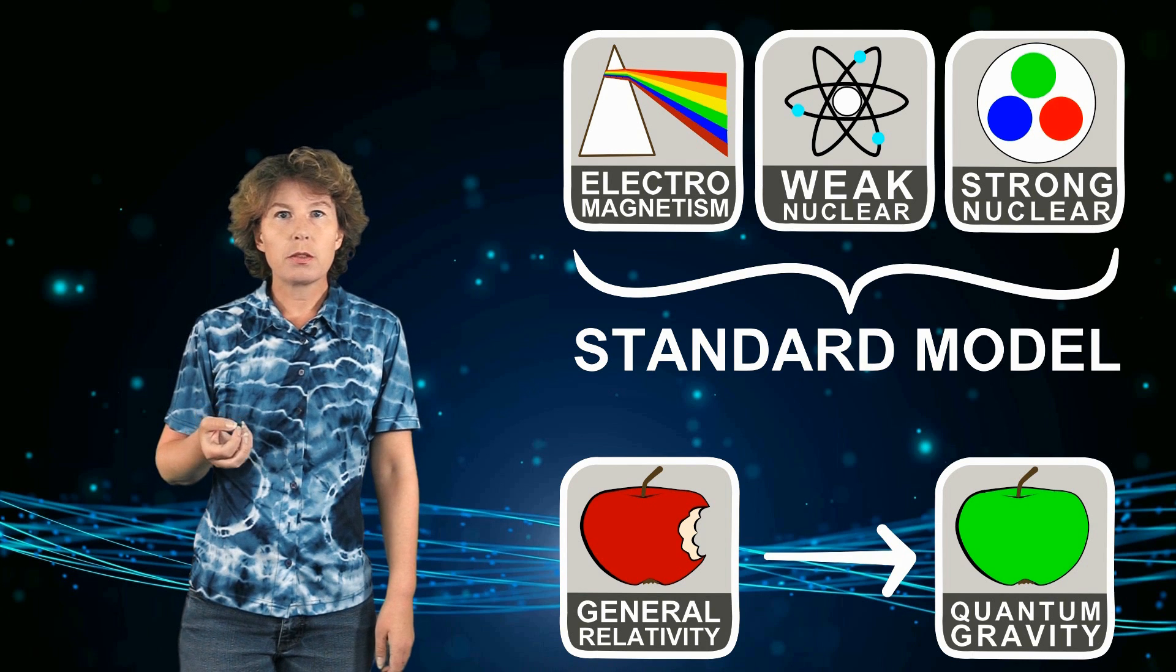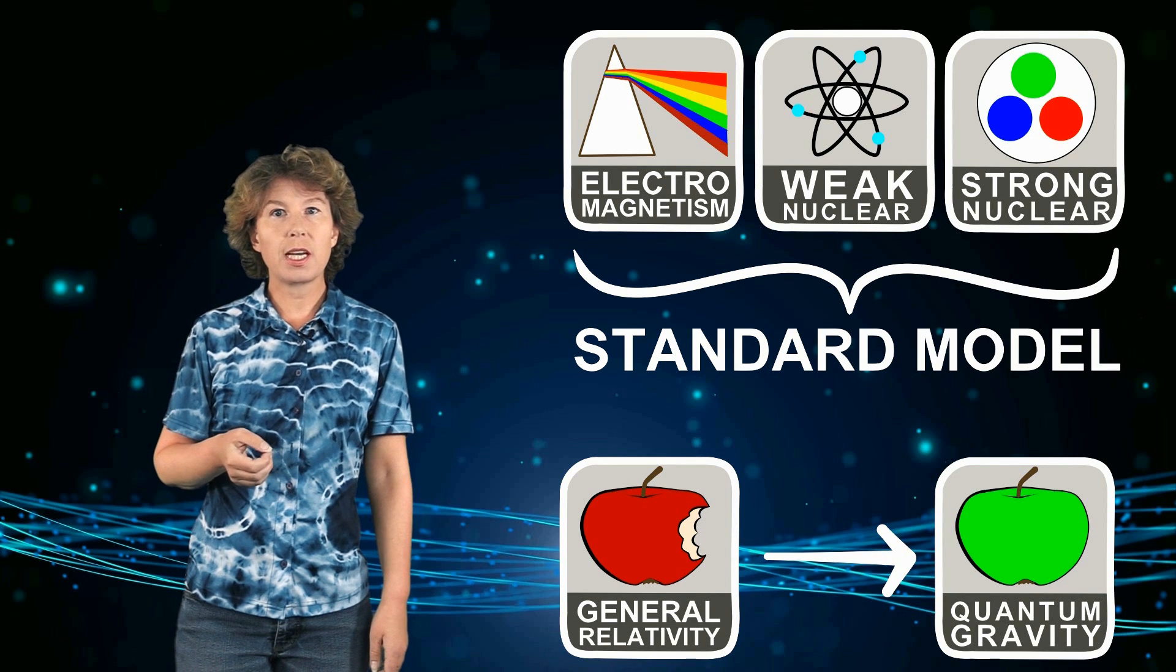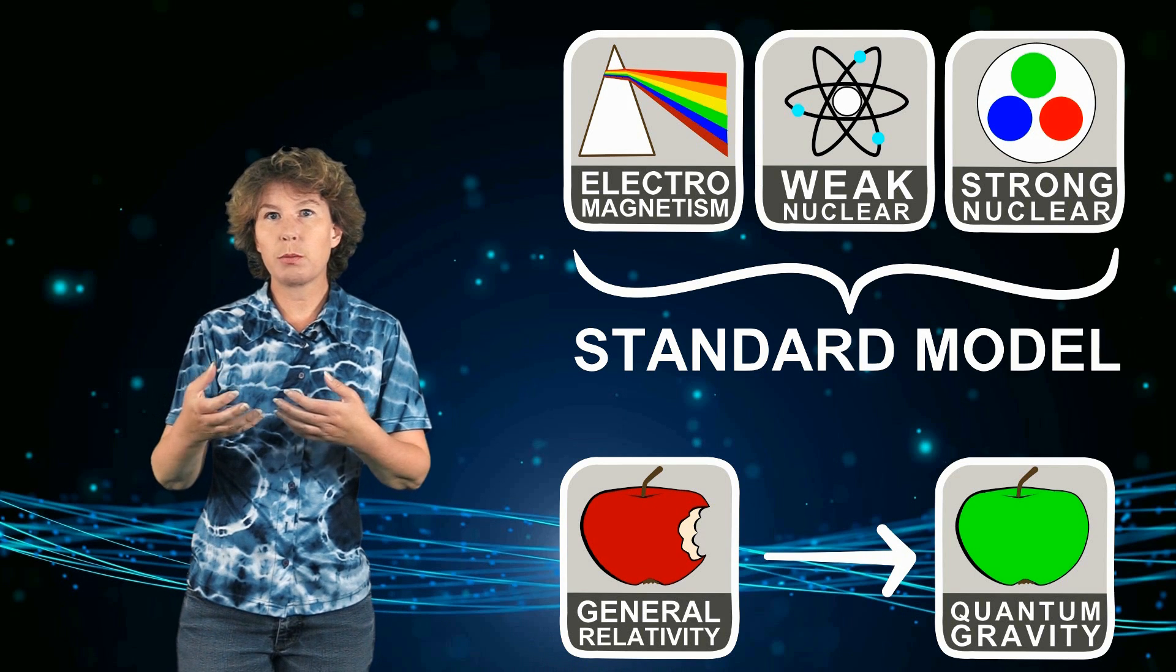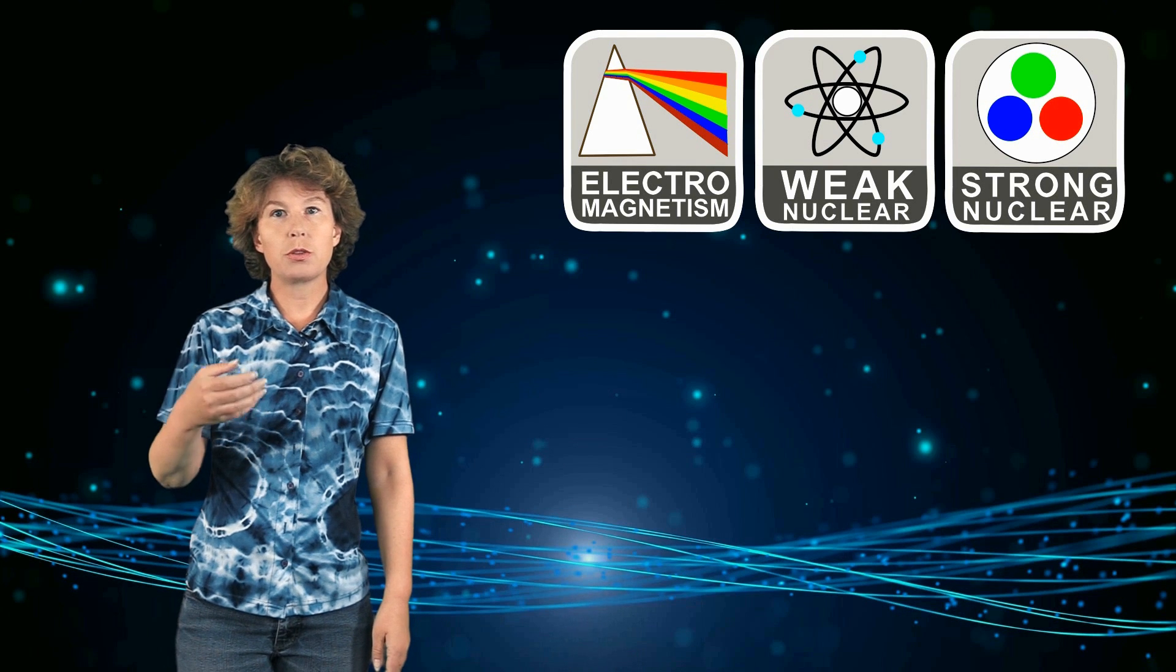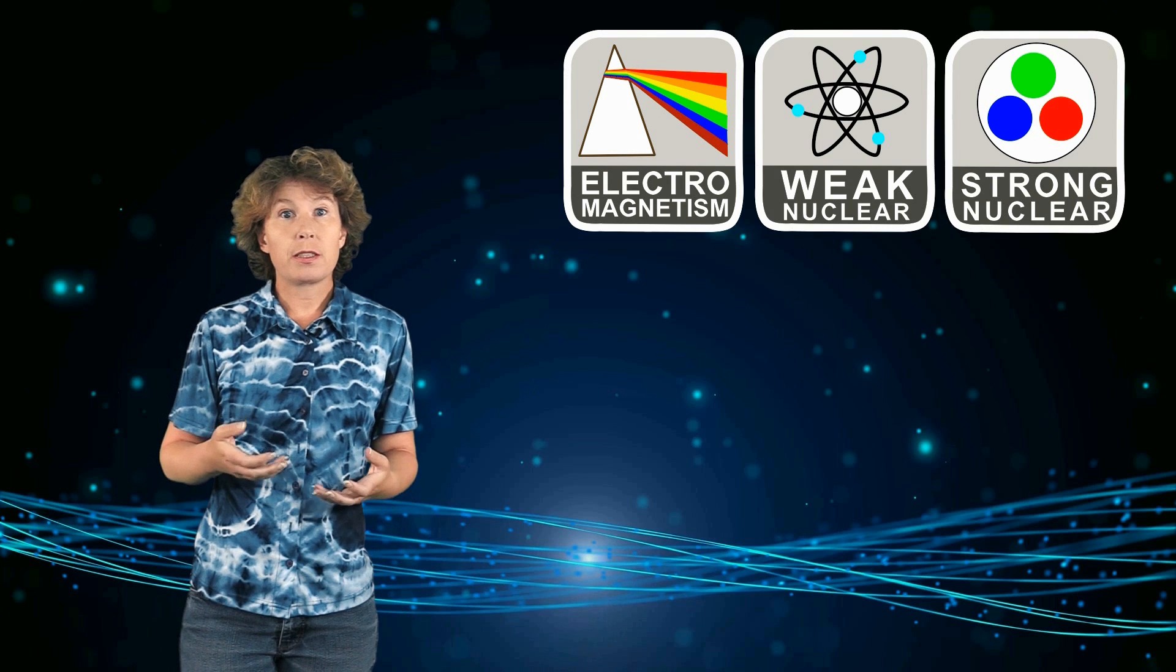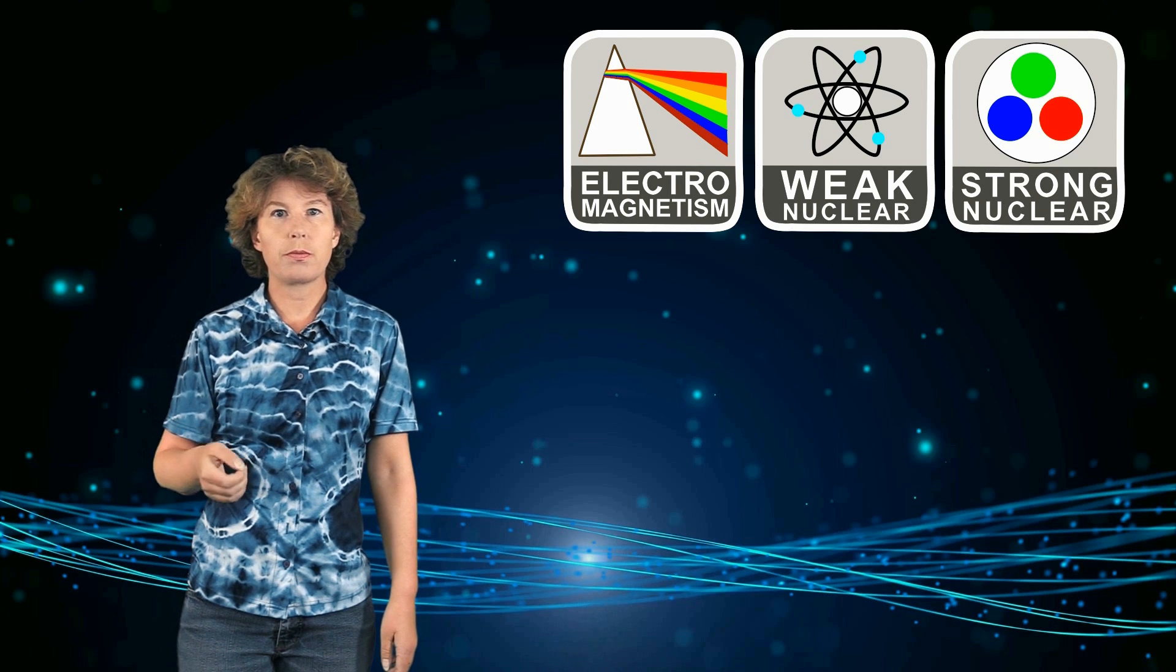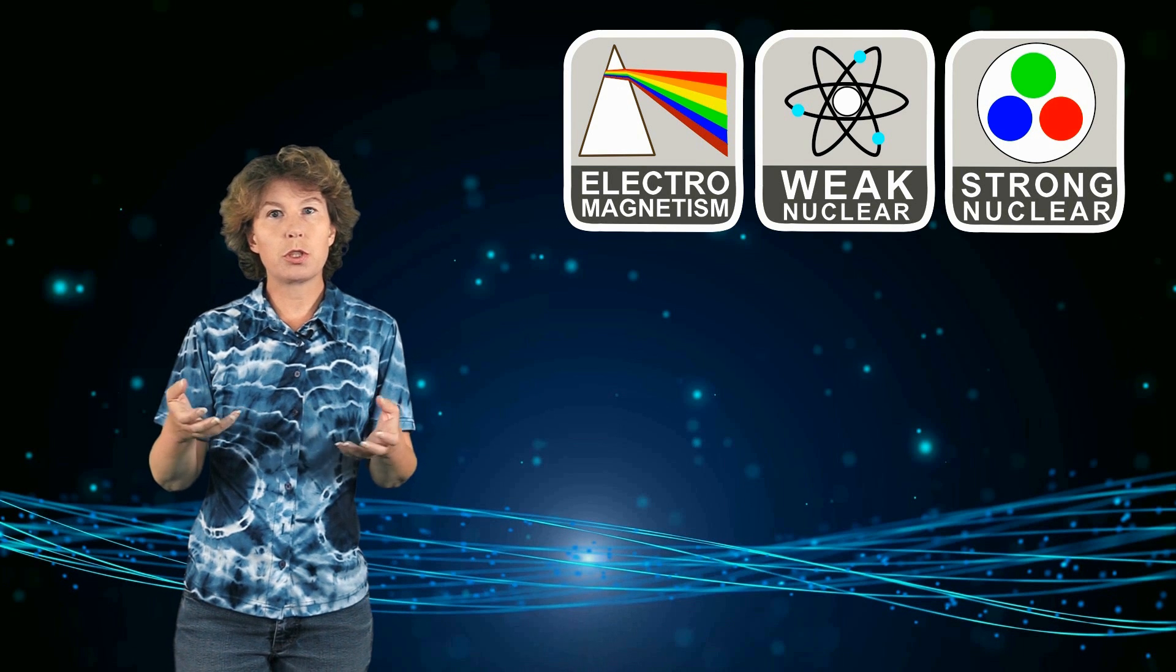Besides the missing theory of quantum gravity, there are various other issues that physicists have with the standard model. Most notably it's that while the three forces in the standard model are all of the same type, they are also all different in that each of them belongs to a different type of symmetry. Physicists would much rather have all these forces unified to one, which means that they would all come from the same mathematical structure.